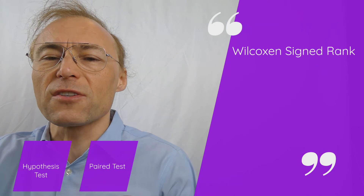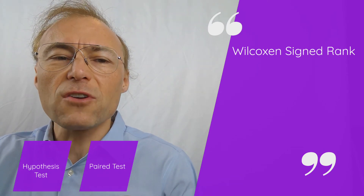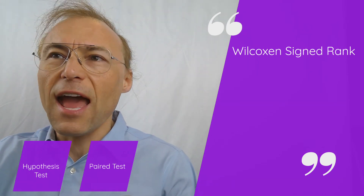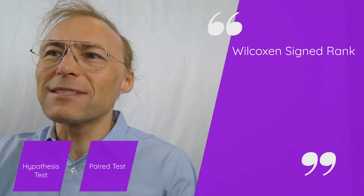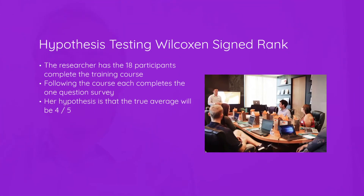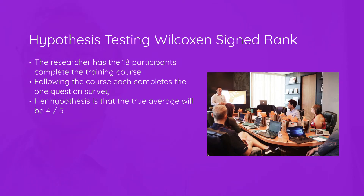Let's talk first about the Wilcoxon Signed Rank Test. I'm going to talk about the hypothesis test and, very importantly, the use of the paired test. One way for our researcher to run her study would be to have the 18 participants complete the training course, and following the course have each participant complete the single one-question survey.